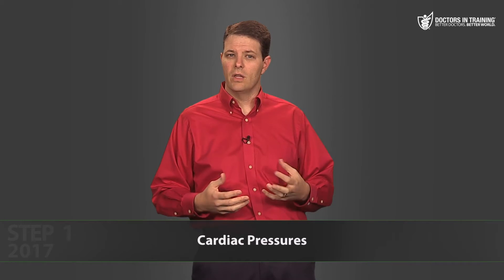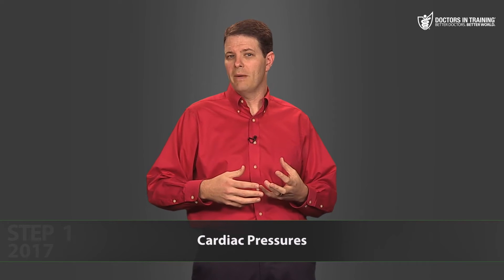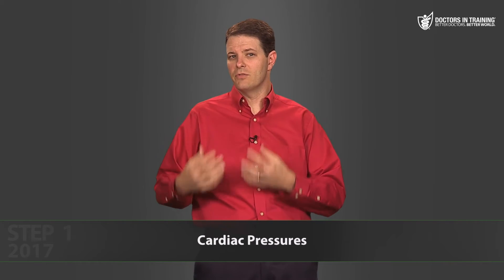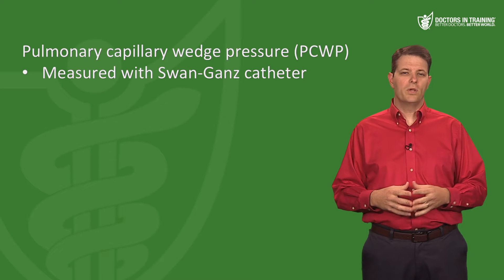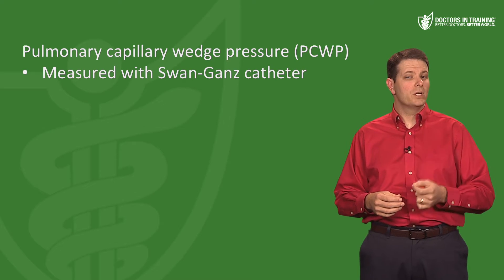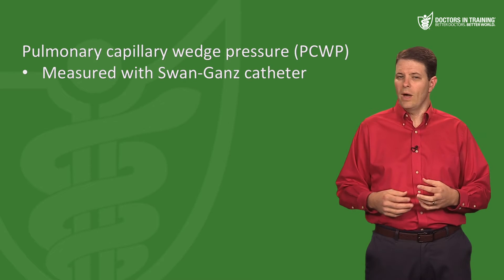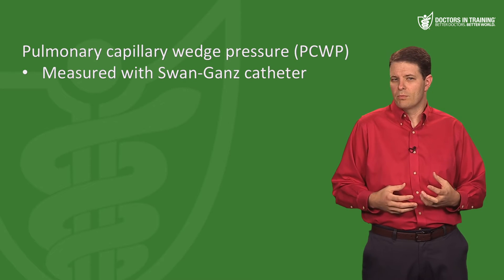The left ventricle is responsible for pumping blood out to the body. If the left ventricle starts to fail, the pressure in the aorta tends to fall, and as blood backs up into the left atrium, the left atrial pressure rises. We use something called the pulmonary capillary wedge pressure to estimate the pressure in the left atrium.